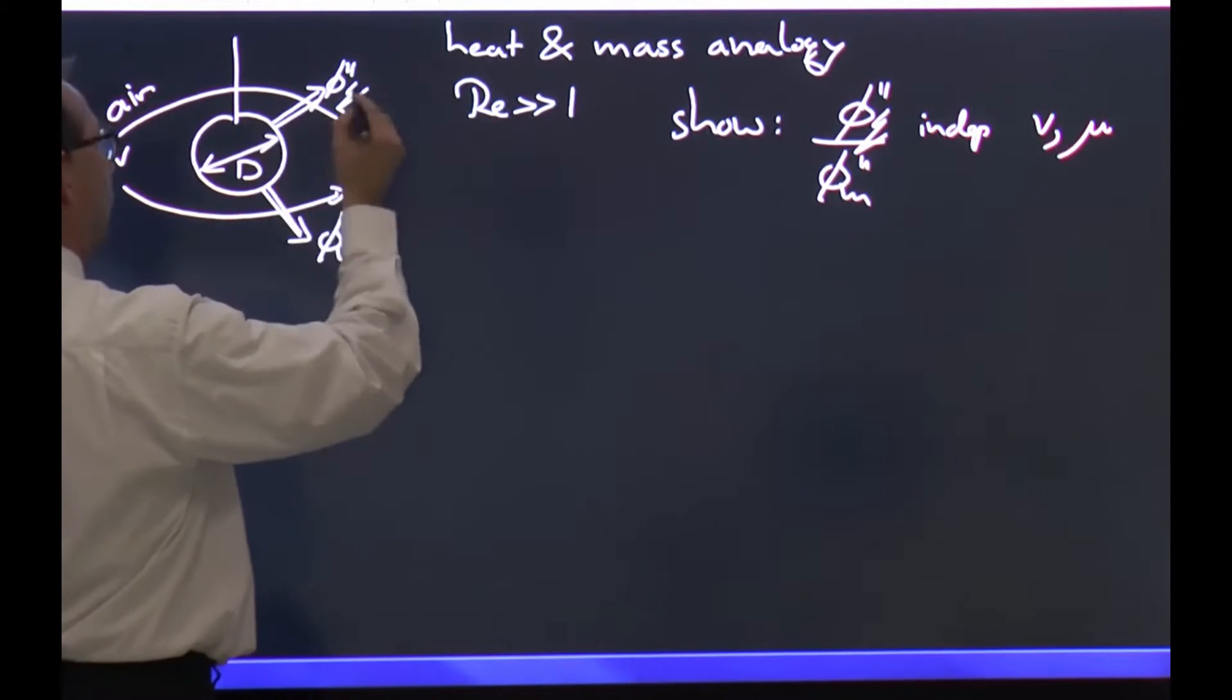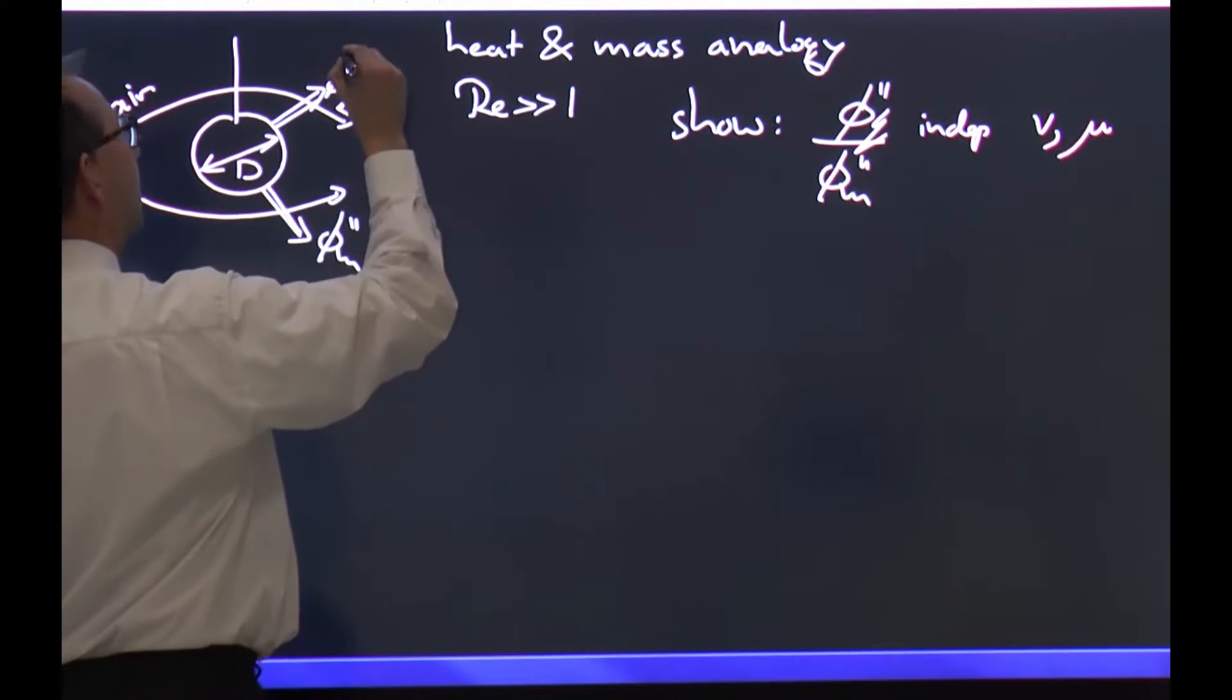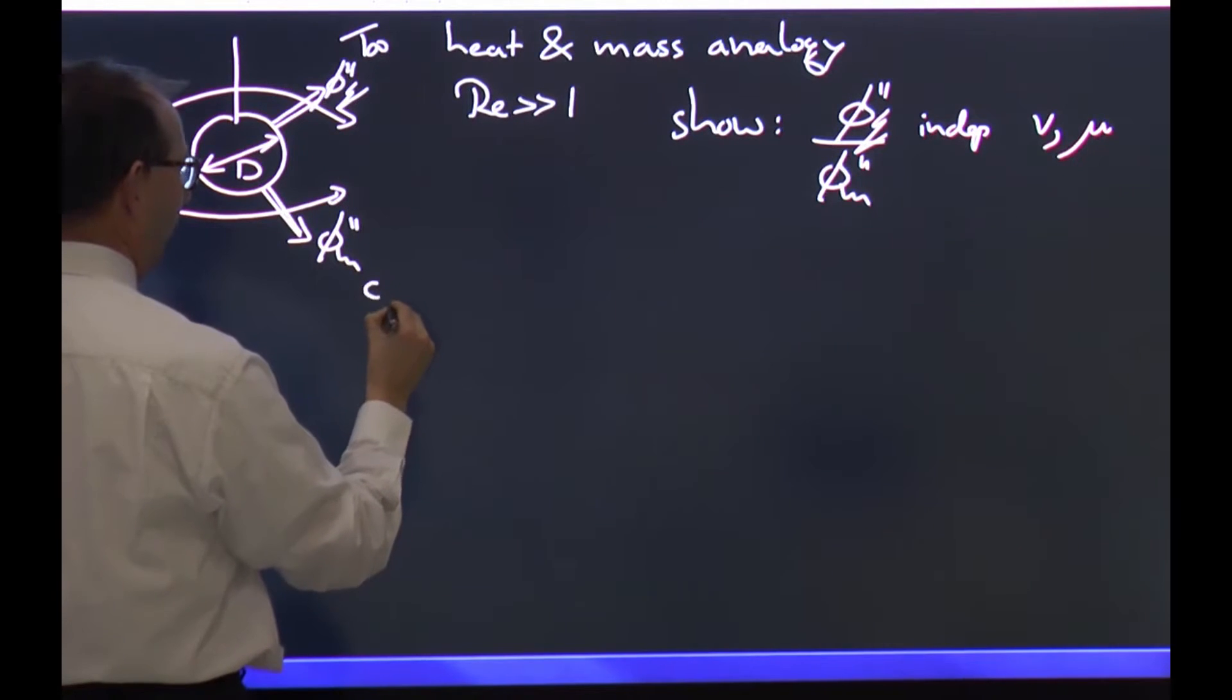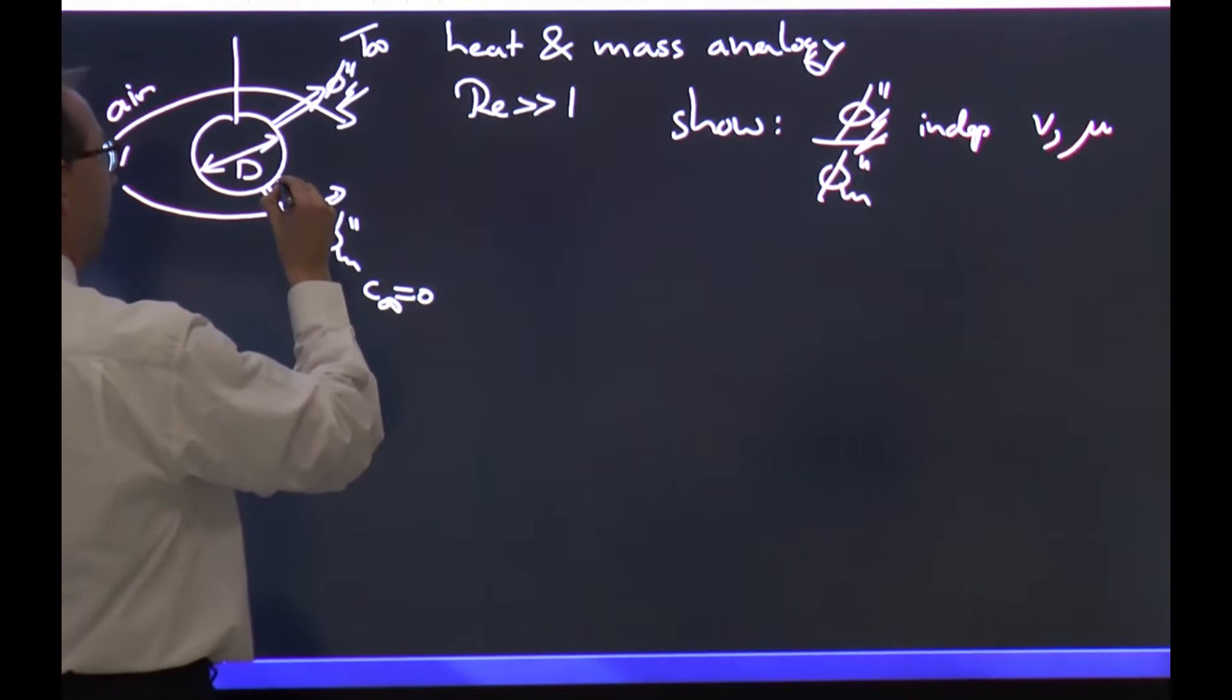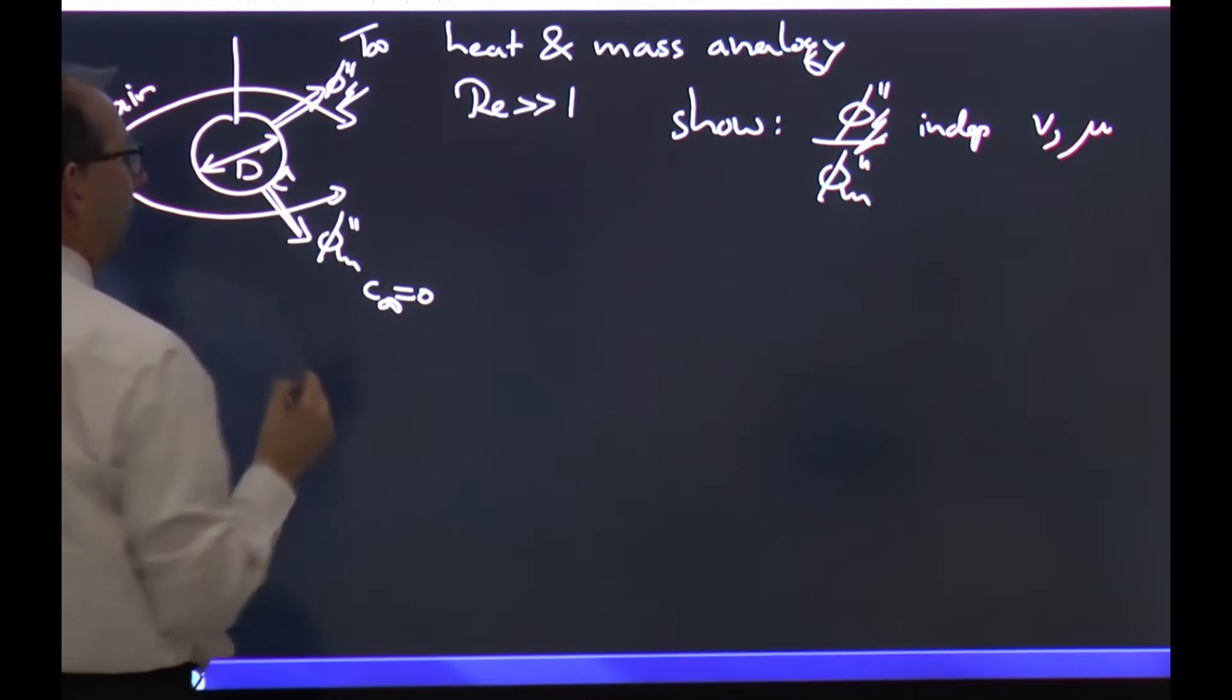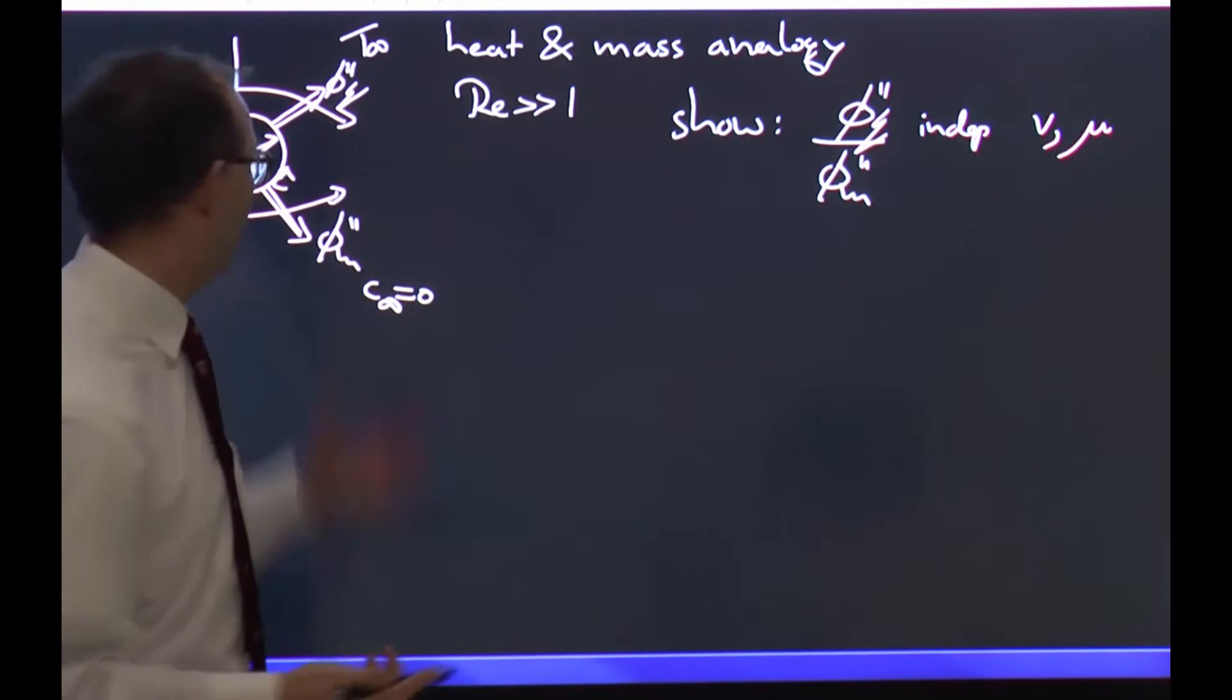How are we going to do that? First we make the case more specific. The temperature far away is TInf, the concentration far away is set at 0. The concentration here at the interface of this sphere is C star and is fixed, for instance the vapor pressure of water if it's a wet one.